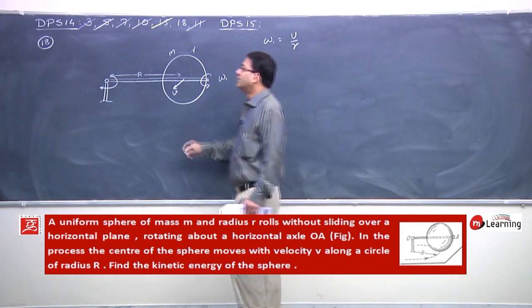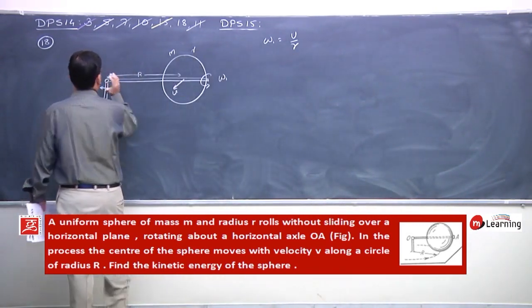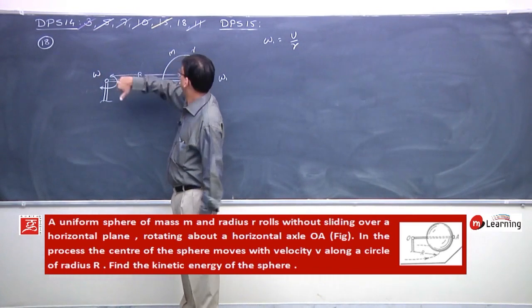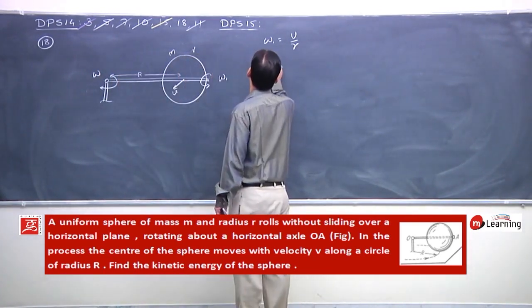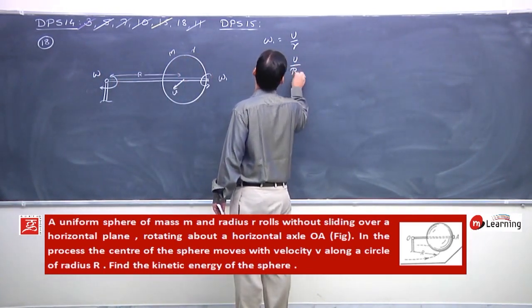Or is axis ke about omega 2, where omega 2 is v by capital R.